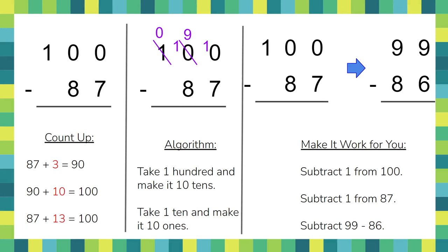Three ways to think about subtraction. If you're subtracting 100 minus 87, I learned the algorithm — the way in the middle. You can't take seven from zero, so you go next door. That's still zero, so you have to go over again, cross out the one, write a little zero, then break the 100 into 10 tens. That's certainly valid and it obviously still works.